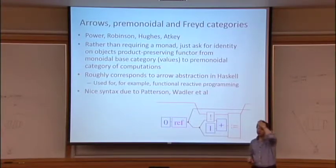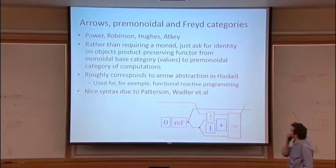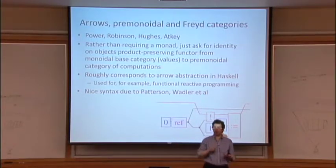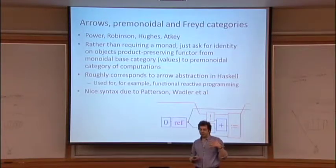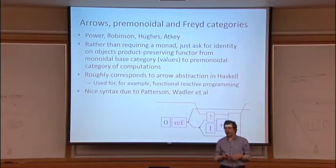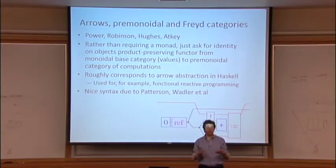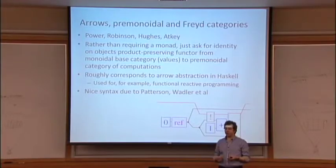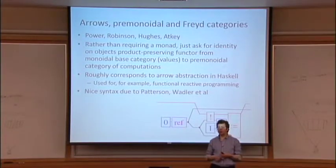Starting with the abstract structure: one thing I would have liked to talk about more is the idea of arrows, pre-monoidal and Freyd categories — a generalization of monads. Previously we talked about having a base category and a monad which is an endofunctor on that category, with computations living in the Kleisli category or maybe the Eilenberg-Moore category. They can always be reflected back down into the world of values, but it's not actually necessary to allow that moving back down again, to have the full adjunction.